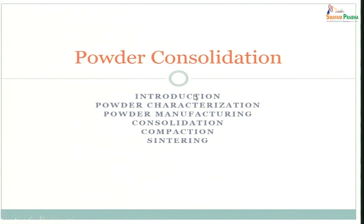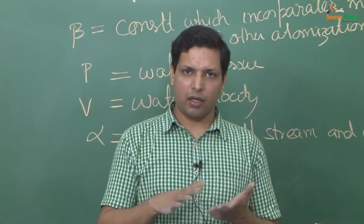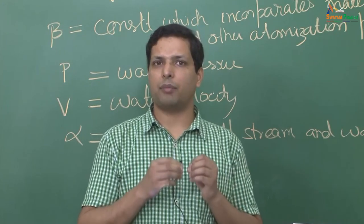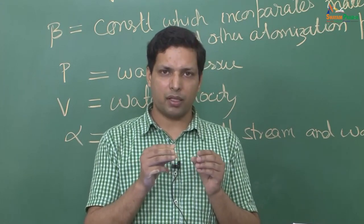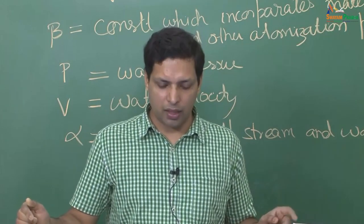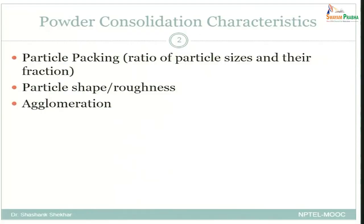We have now covered the introduction to powder processing, various powder characterization parameters and techniques, and many different ways to manufacture powder. Next we move to powder consolidation. Before compaction, we want to know the relative density and the number of point contacts between particles — because it is at those contact points that sintering will eventually start.